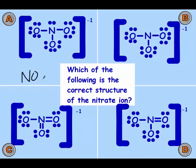So nitrate is NO₃ with a negative charge, so I have 24 valence electrons. The first one is wrong because 26 valence electrons were used. I only have 24, I can't use 26.